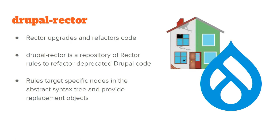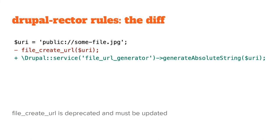The rules target specific nodes in an abstract syntax tree. You don't need to know what that is — think of it as: you write code, it gets turned into a tree of objects that can be traversed, and we can say 'this is a function call, this is the method I need to fix, here's the replacement tree syntax.' For example, file_create_url() was deprecated and is to be replaced with the file_url_generator service invoking the generate_absolute_string method. The simplest replacement without trying to do dependency injection for you is via Drupal::service().